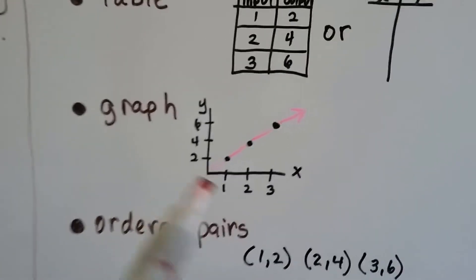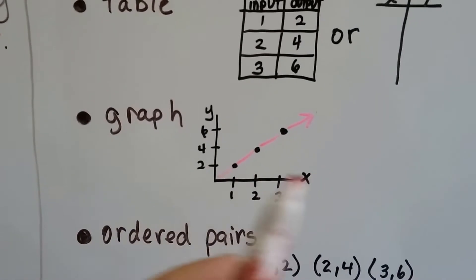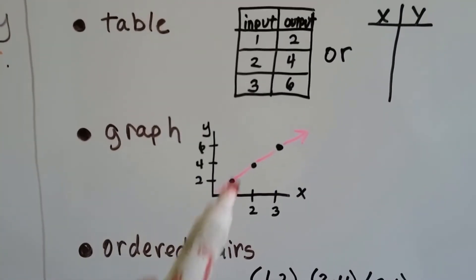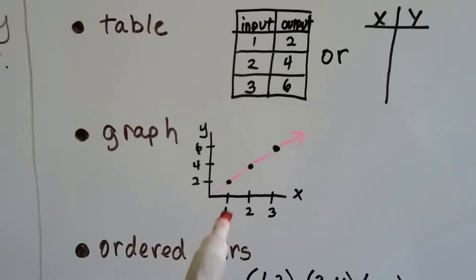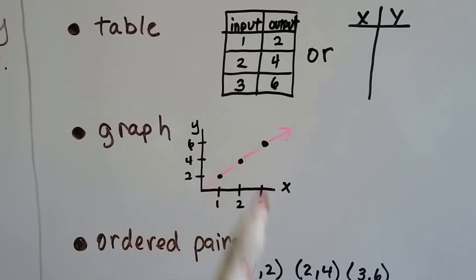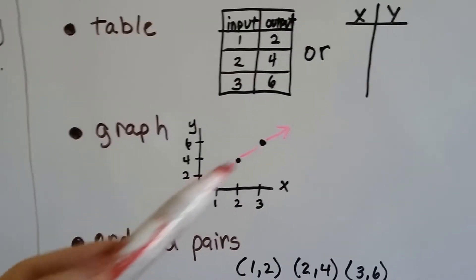We can even graph it. This is x, the horizontal, and y is the vertical. And we can graph these numbers 1, 2 right here or 2, 4 or 3, 6. We can even see the line that's graphed.